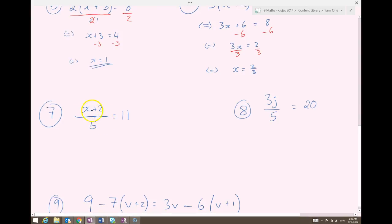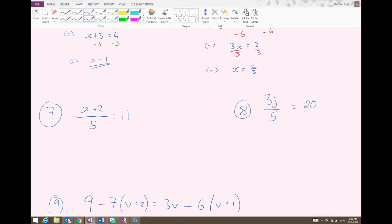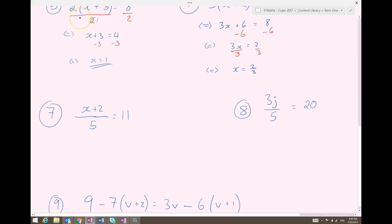7 and 8, two similar questions here. On the top, I've got x plus 2 divided by 5. Whereas on the other side, I've got 3j divided by 5. So you can see that there's a difference when there's addition on the top or subtraction. So two terms on the top as opposed to one term, which is just a product of factors.